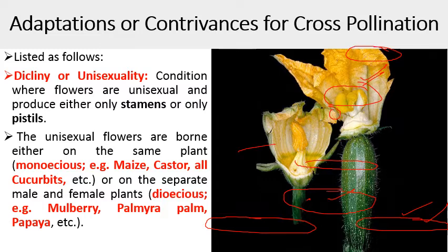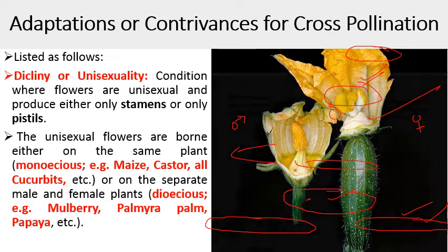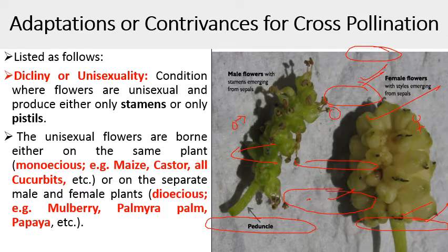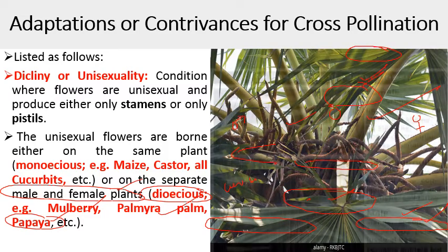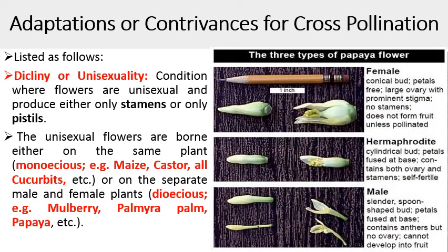The floral diagram and floral formula of both male and female flowers of Ricinus communis are shown here. Next, the flower of Cucurbita also bears separate male and female flowers — these plants are monoecious but bear male and female flowers at separate locations on the same plant. Plants which have separate male and female plants are known as dioecious plants; examples include mulberry, Palmyra palm, and papaya, where male and female plants are present at different locations.